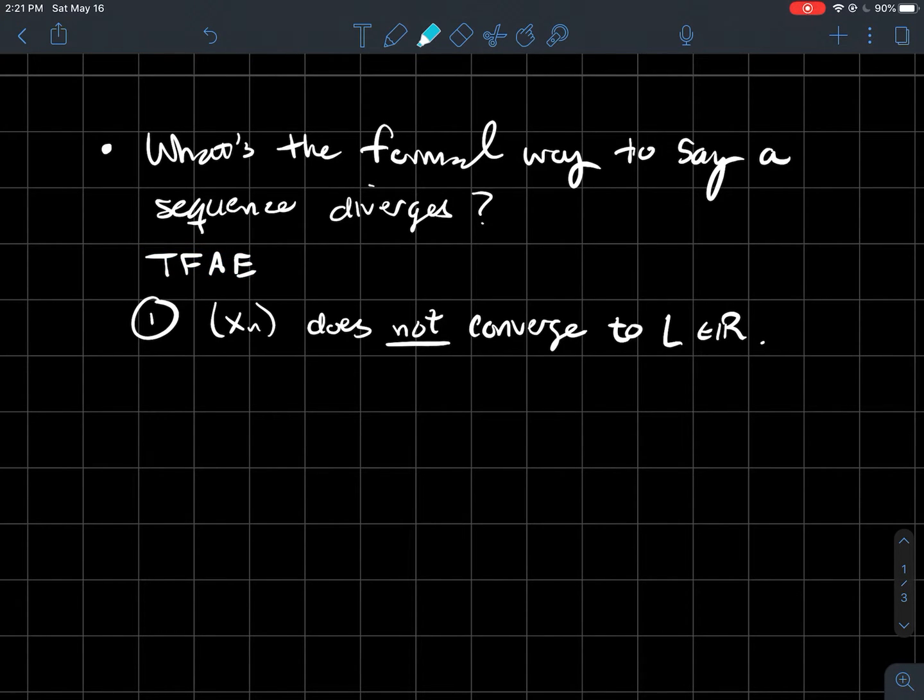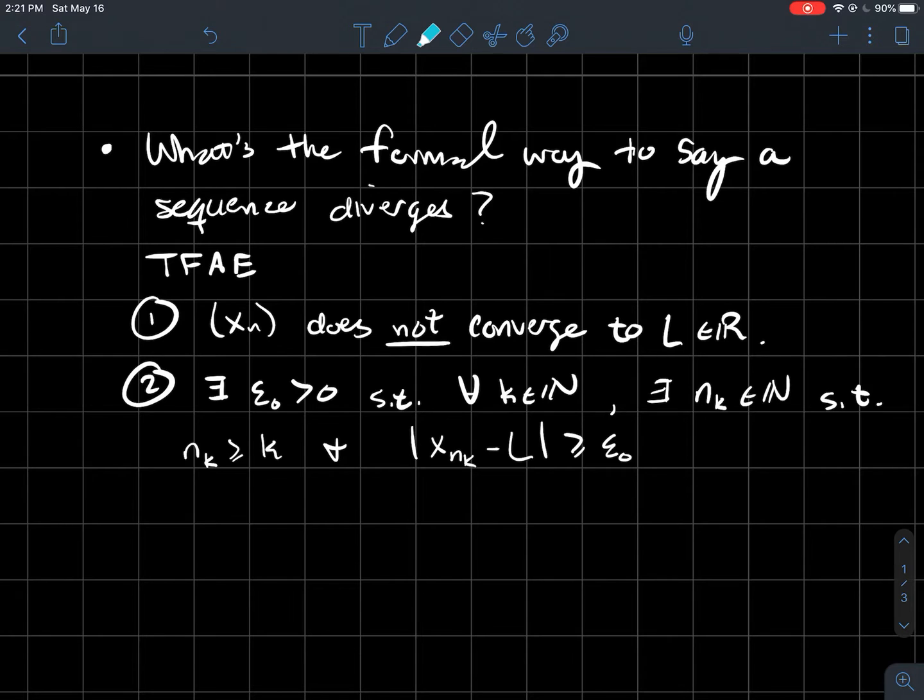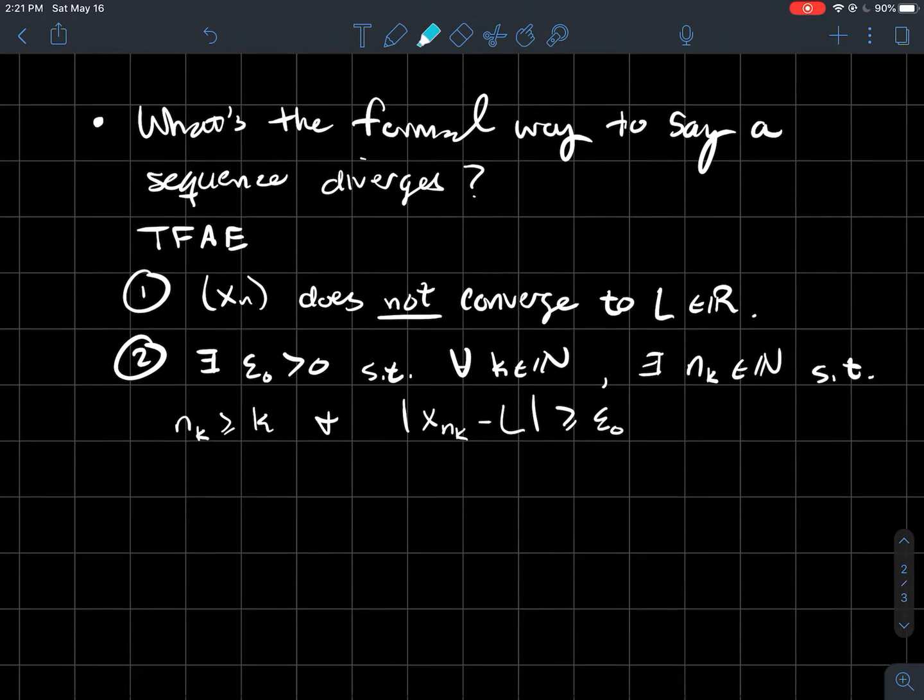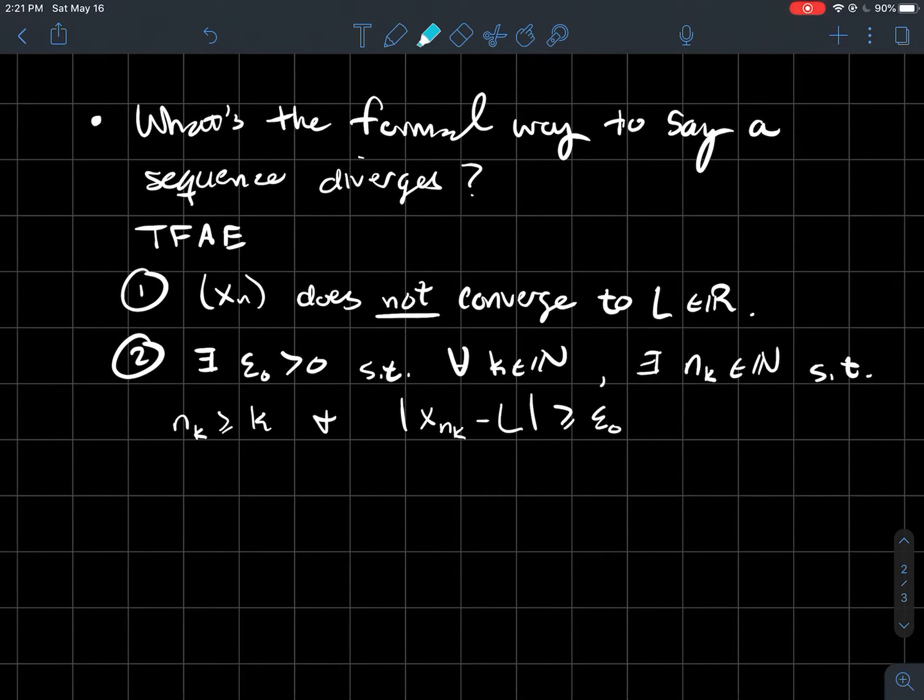If and only if there exists a particular epsilon, so epsilon naught to specify that, such that for every natural number k, there exists some index nk, such that nk is bigger than k, which isn't too hard to believe. But then in particular though, xnk is outside of that epsilon naught window of L. So xnk is not within epsilon naught or epsilon zero of this number L.